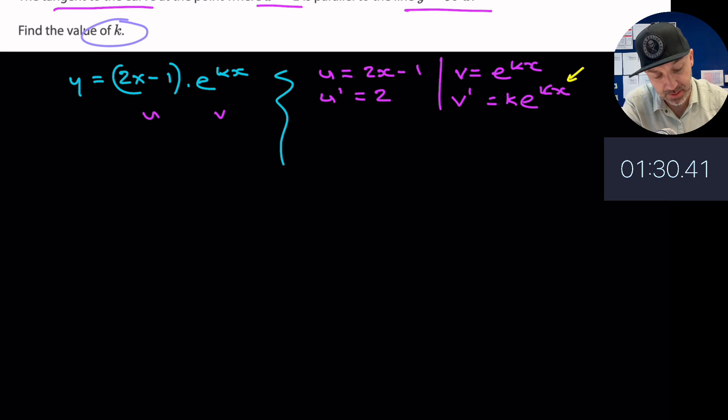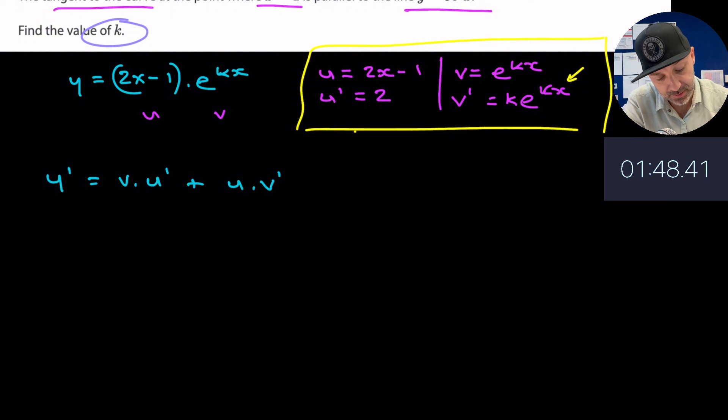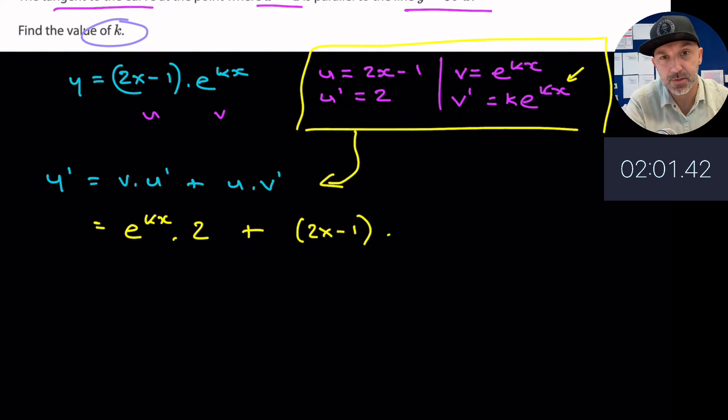So we'll go back over to the left hand side now and we are going to substitute some of these values in. We have the derivative of y is equal to v times the derivative of u plus u times the derivative of v. If we substitute the values on the right hand side here into this expression, we would end up with v which is e to the kx times the derivative of u which is just 2, plus u which is (2x - 1) times the derivative of v which is just k e to the kx.